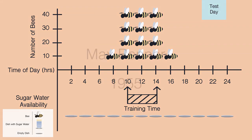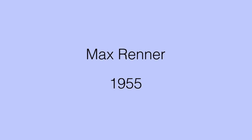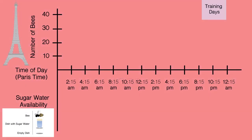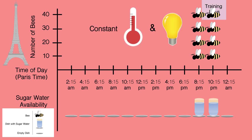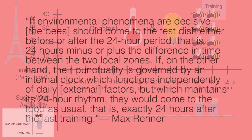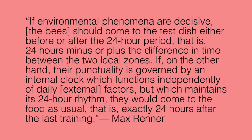In 1955, Max Renner wondered if Beiling had accounted for other periodic external factors, such as the gravitation of the sun and moon. Renner used Beiling's sugar water technique to conduct a definitive experiment. Renner first trained bees to collect sugar water at a certain time in Paris, then shipped the bees to test their behavior in a different time zone. He trained the bees in Paris for several days to collect sugar water from 8:15 to 10:15 p.m. French time in a closed room under constant temperature and light. After training, the bees were flown overnight to New York.